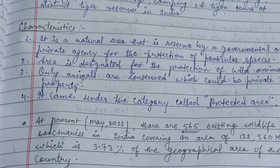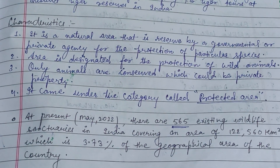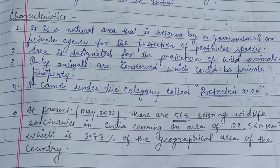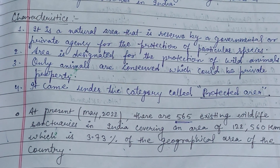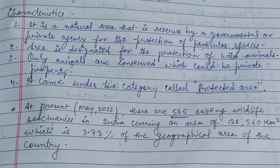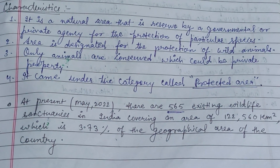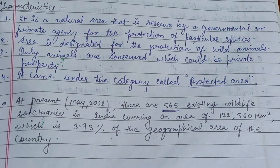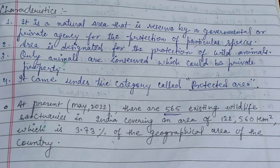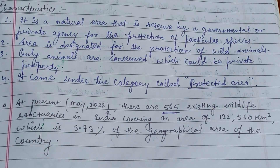So here are the characteristics. It is a natural area reserved by the governmental or private agency for the protection of particular species. The area is designed for the protection of wildlife animals, and only animals are conserved, which could be a private property. At present, there are about 565 existing wildlife sanctuaries in India covering an area of 122,560 km²,